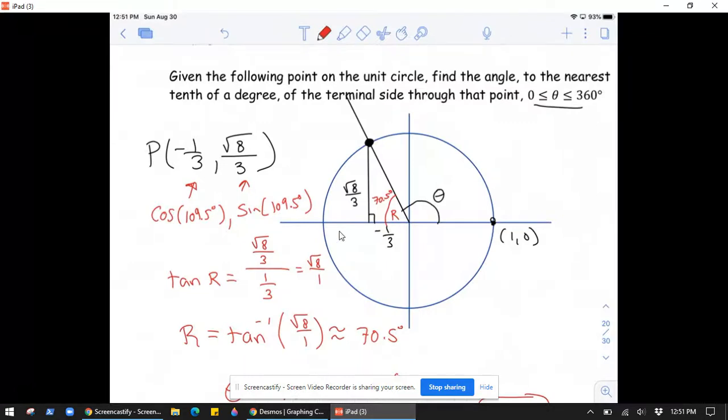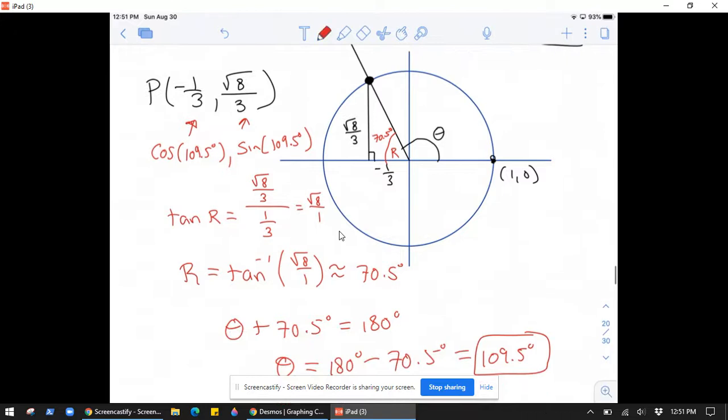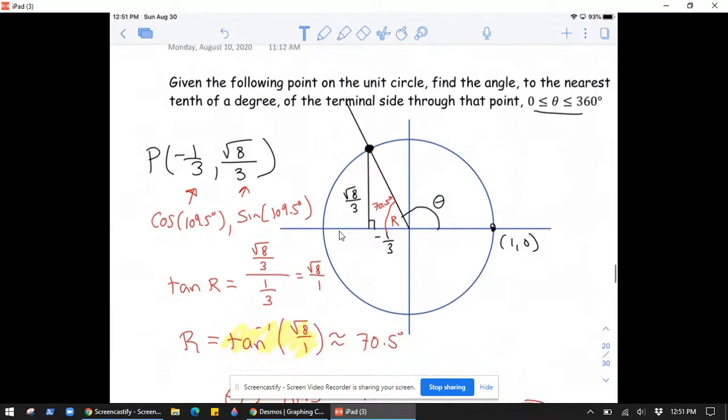But, all in all, looks like we did it right. So, the key thing is to note that the tan inverse button will only give you an acute angle. And you need to look at your diagram and be able to reason what angle theta is based on the diagram.